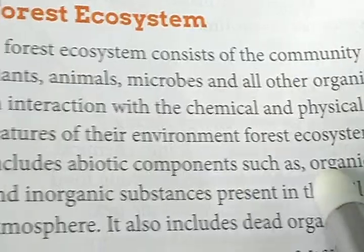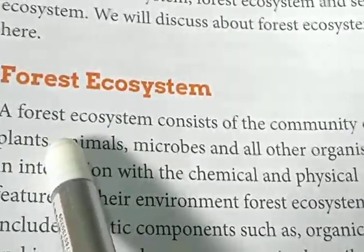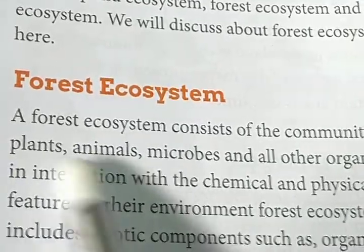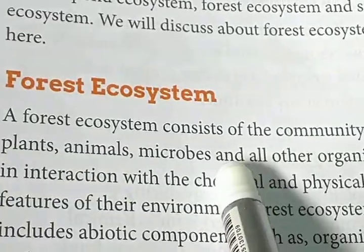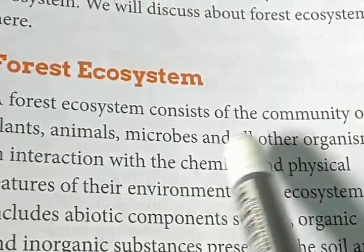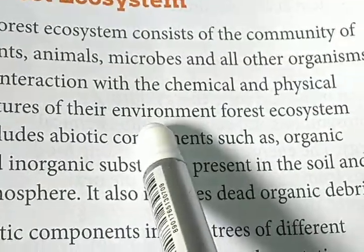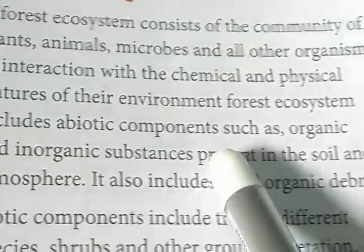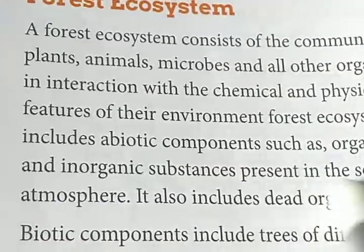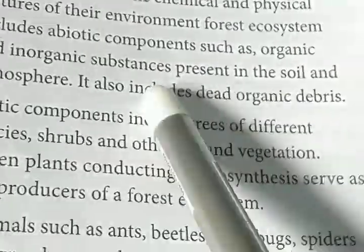Forest ecosystem includes abiotic components such as organic and inorganic substances present in the soil and atmosphere. The community includes plants as producers, animals as consumers, and microbes as decomposers — all living together in a community and forming an ecosystem. The biotic components depend upon and interact with the chemical and physical features of the environment. It also includes dead organic debris, where microbes play a key role.